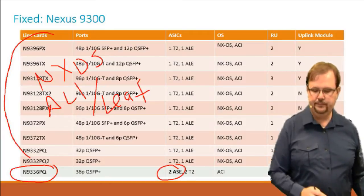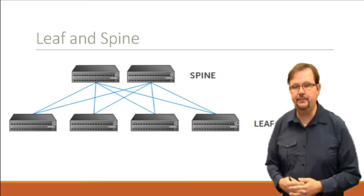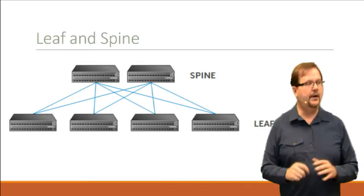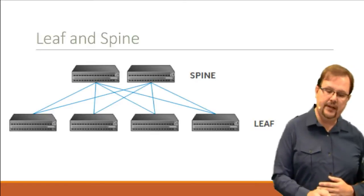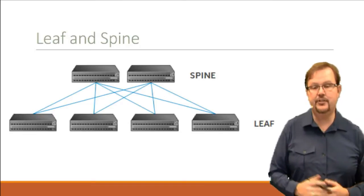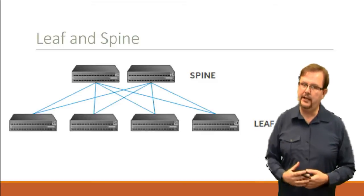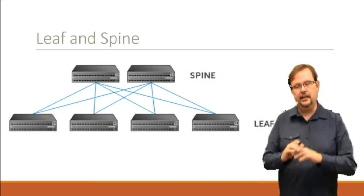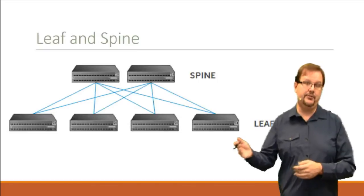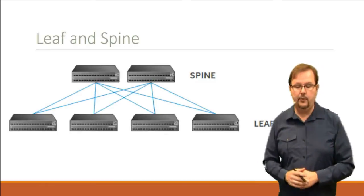In ACI, we require a spine and leaf topology. In a basic topology, we have two spines and four leaves. The only thing that connects to spines are leaves, and the only thing that plugs directly into a spine is a leaf. When you configure a modular chassis like a 9508, the entire chassis is all spine or all leaf — you cannot have some cards do spine and some do leaf, because the supervisor module is running as either spine or leaf.